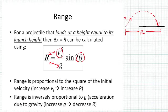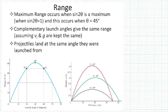As long as you know the initial velocity and the launch angle theta, the range equation returns the distance in the x-direction, provided the object lands at exactly the same height from which it was launched. Here's a great Angry Birds application — you want to find the maximum range.